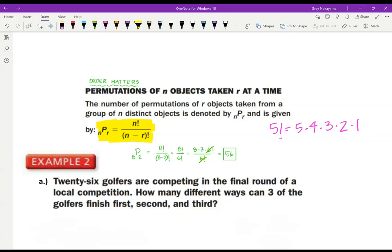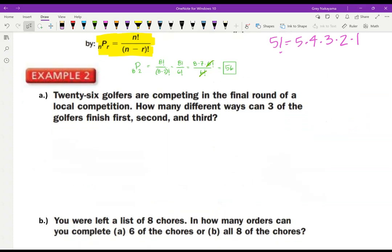Now look at number 2A. 26 golfers are competing in the final round of a local competition. How many different ways can three of the golfers finish first, second, third? Y'all, there's two ways to do this problem, however you see it, whatever's easier for you, do it that way. It does not matter. I probably would start off by saying, okay, first, second, third, I got three blanks. If I have 26 golfers, then I've got 26 choices for the first blank, 25 for the second blank, and 24 for the third, which will give me 15,600.